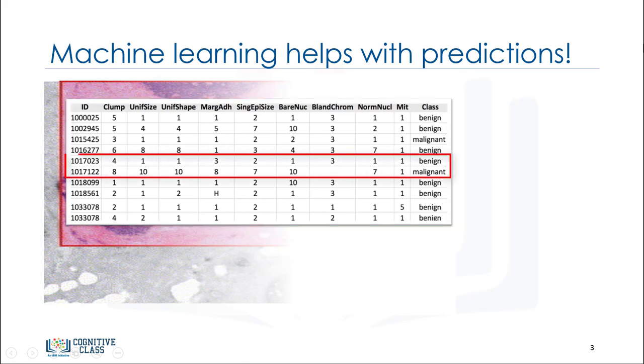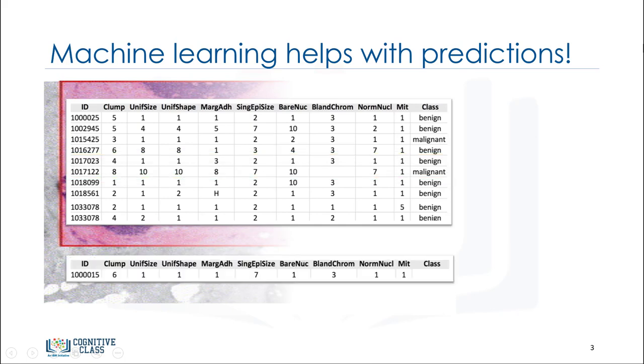Analysis of the original data showed that many of the characteristics differed significantly between benign and malignant samples. You can use the values of these cell characteristics in samples from other patients to give an early indication of whether a new sample might be benign or malignant.